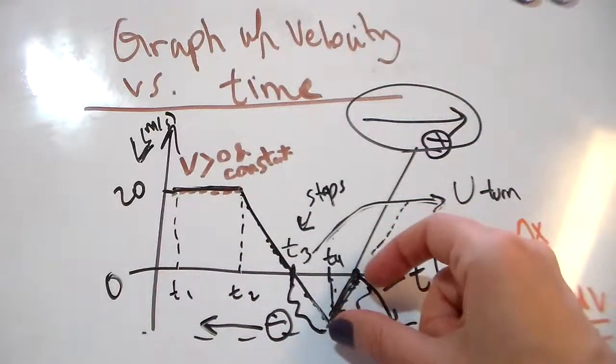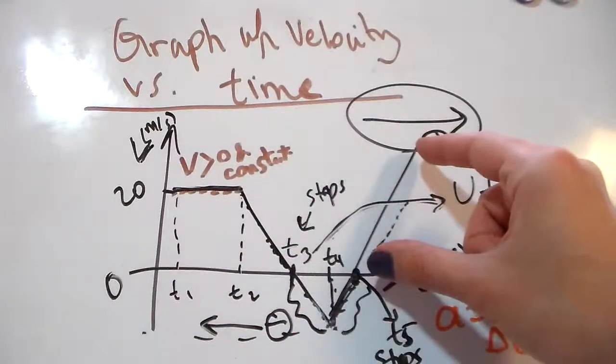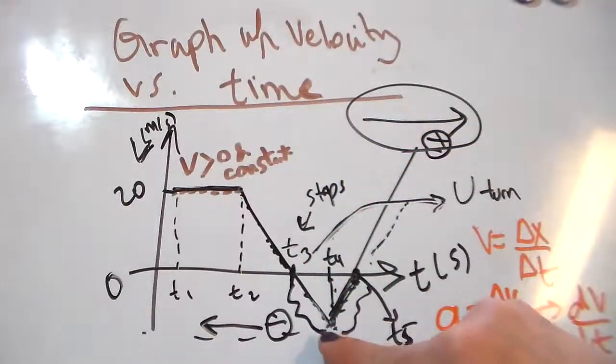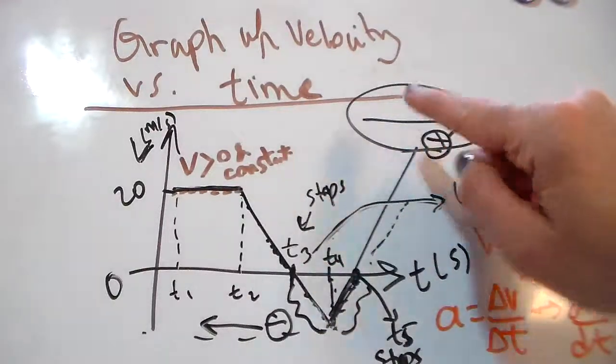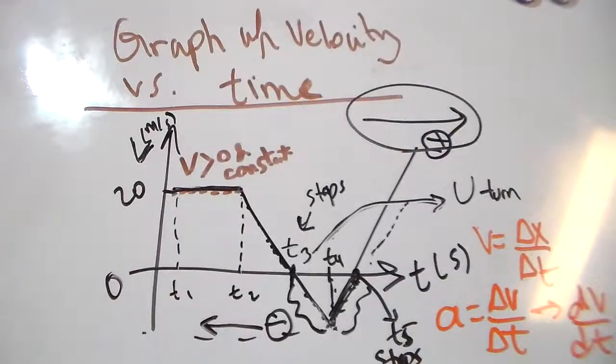This is also slowing down motion, this is speeding up motion. From t4 onwards, the acceleration is positive. This is a wrap-up for graphs of velocity versus time.